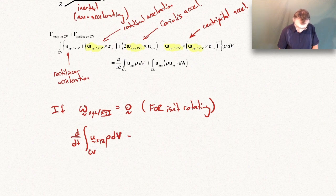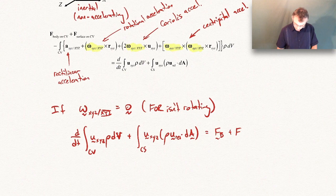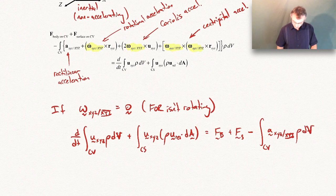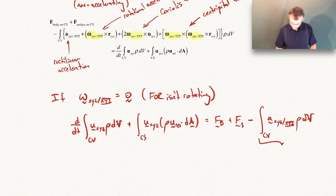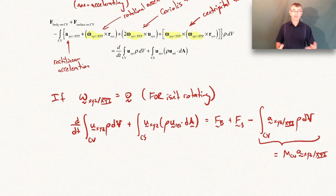With non-rotating rectilinear acceleration only, the simplified equation has: the time rate of change of linear momentum in the control volume using little xyz; the flux of linear momentum out through the control surface with velocity measured in our accelerating coordinate system; body and surface forces same as before; and finally a term that is the rectilinear acceleration of our coordinate system times the total mass in the control volume, since integrating ρdV over the control volume gives the total mass.